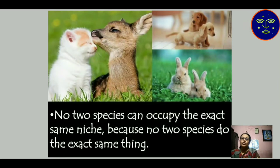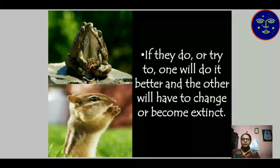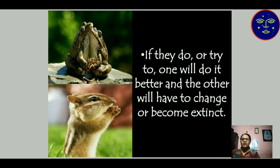No two species can occupy the exact same niche. Two species cannot occupy the same niche because no two species are exactly alike — they differ in their character, activity, and habitat. So no two species occupy the exact same job in a particular ecosystem. If they do or try to, one will do better and the other will change its activity or become extinct — meaning totally disappear from the ecosystem.